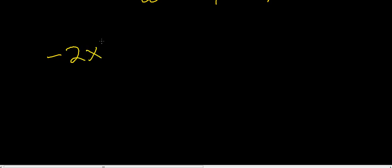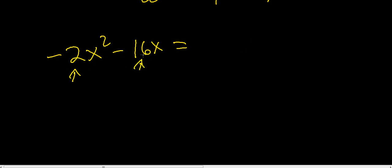Let's do another example. What if we had negative 2x squared minus 16x? Once again, start with your coefficients. Figure out the greatest common factor between negative 2 and 16, which is going to be negative 2. Then let's work with our variables — the greatest common factor between x squared and x is going to be x. Open up the parenthesis.